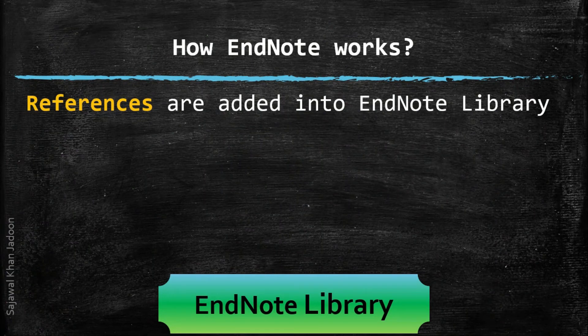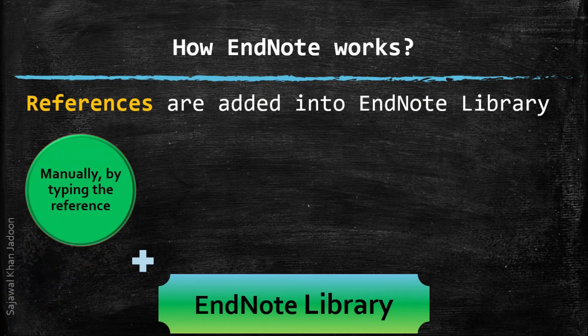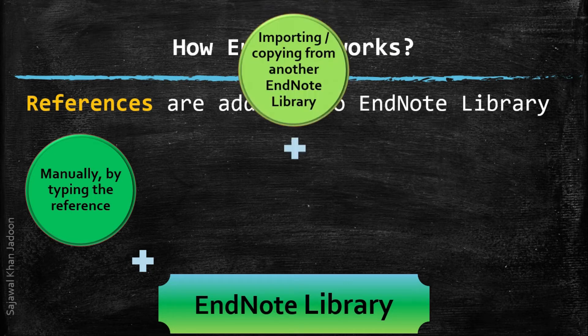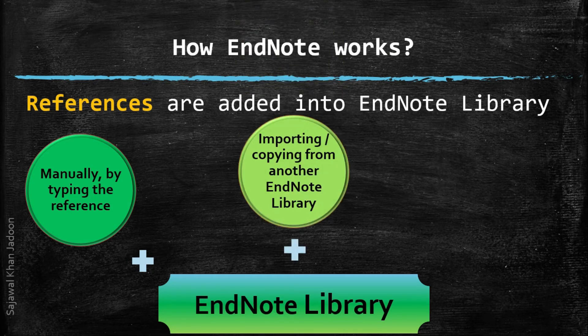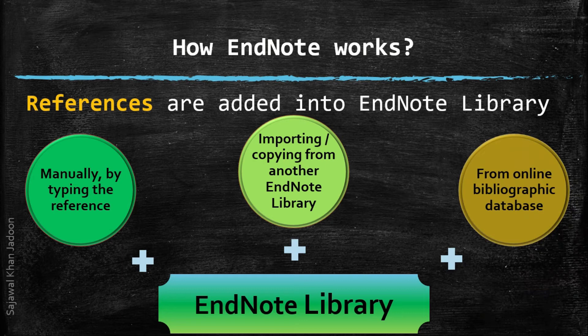EndNote references are added into the library to be used in research documents. References are added by three ways into the EndNote library. First, manually by typing the reference. Second, by importing, copying, or sharing from another EndNote library. Third, from online bibliographic databases.